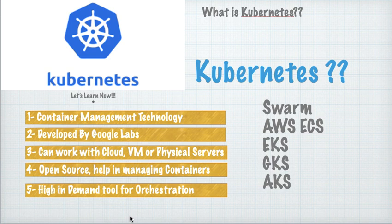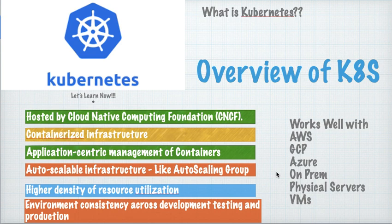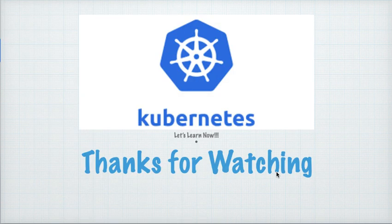If you do not want to go with Kubernetes, there are other options: Docker Swarm, AWS ECS (Elastic Container Services), Elastic Kubernetes Services, Google Kubernetes Services, and Azure Kubernetes Services. These are the platforms available as of today, and you can learn any of them. That's it for this video — thank you so much for watching. Have a good time and happy learning. If you are new to my channel, please like, share, and subscribe with your friends.